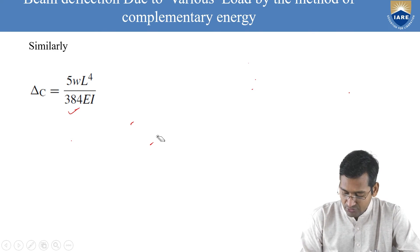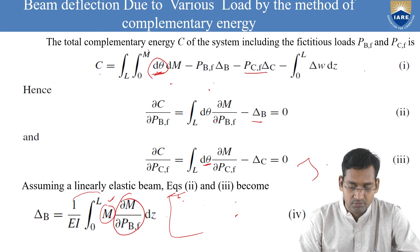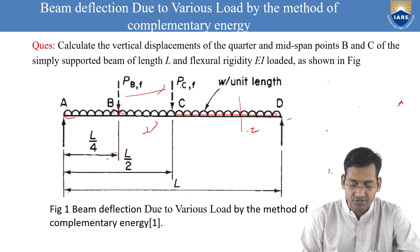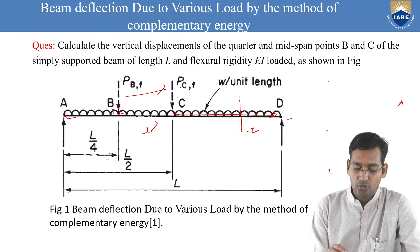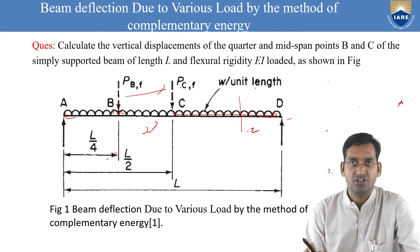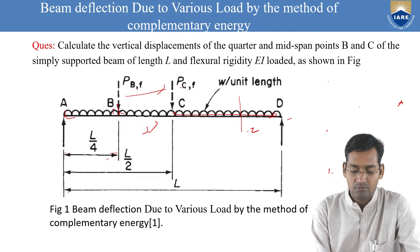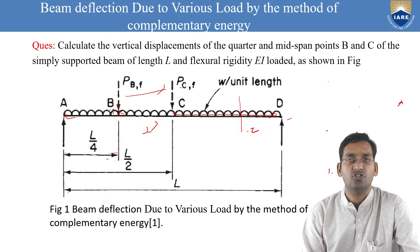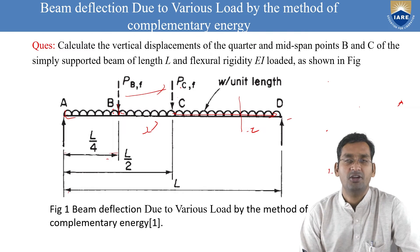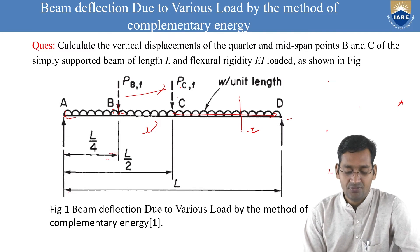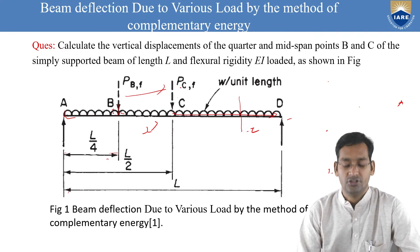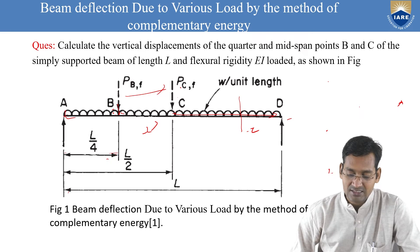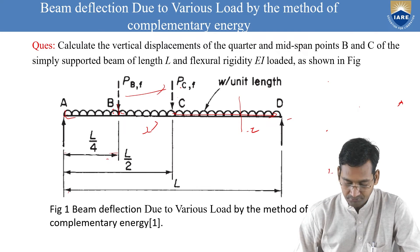Due to some disturbance, I am explaining segment A to B once again properly. Our question: a simply supported beam of length L has point load PBF at L/4, point load PCF at L/2, and UDL of W per unit length over the full span. We need to find deflection at B and C.